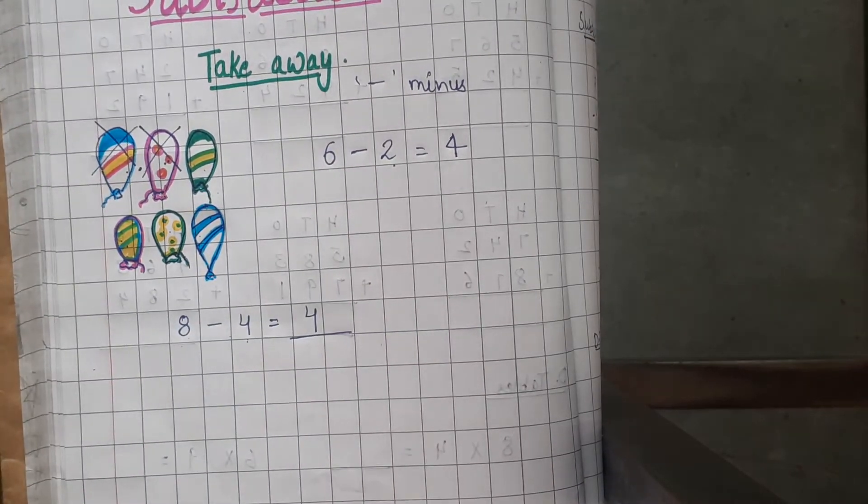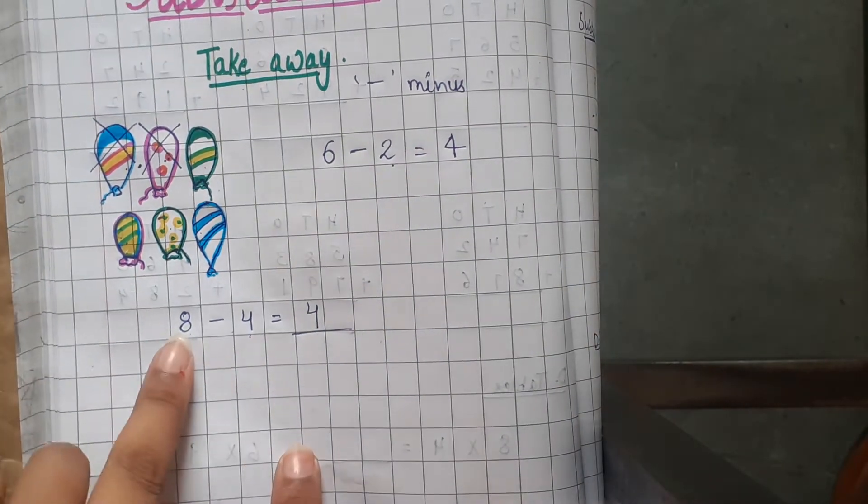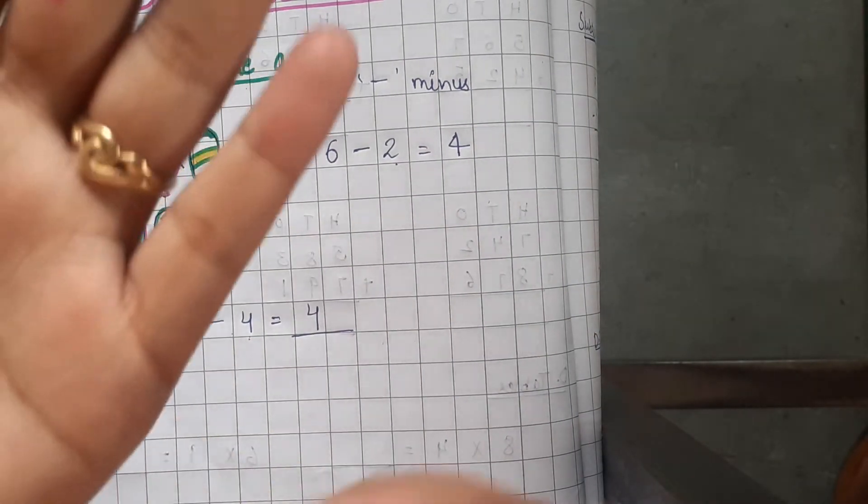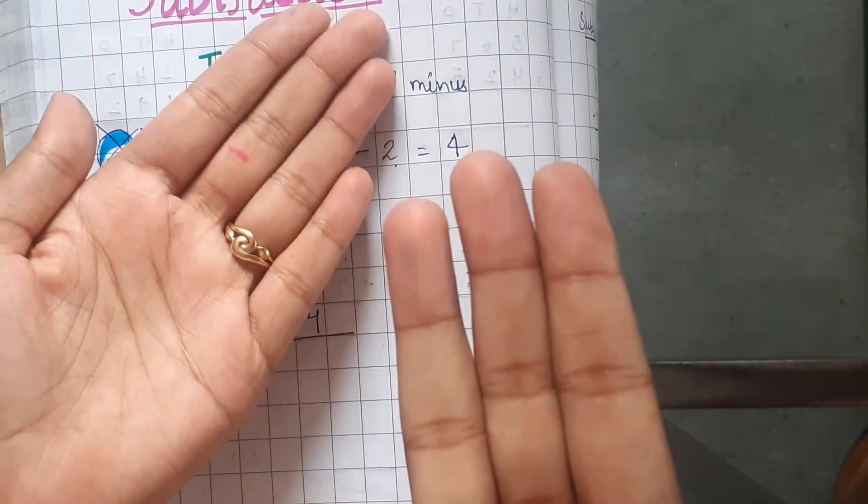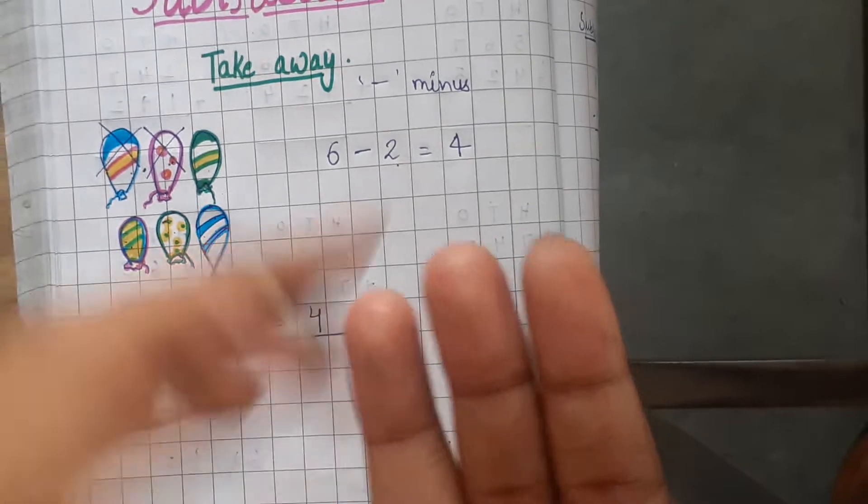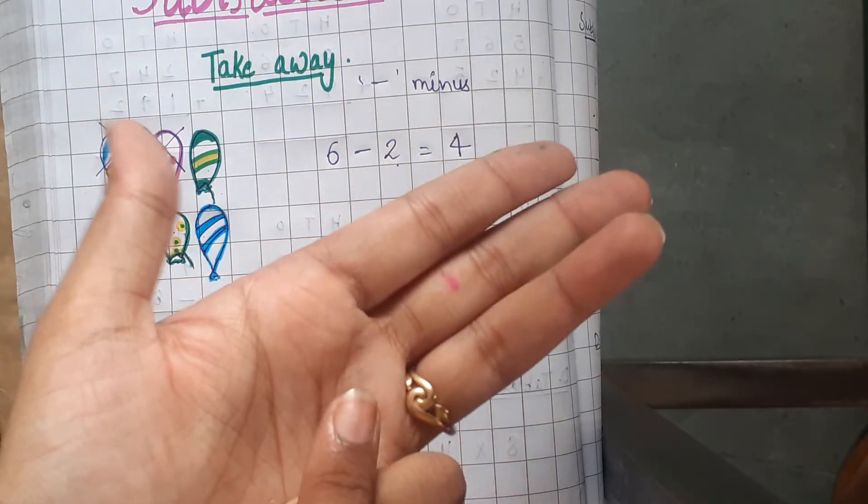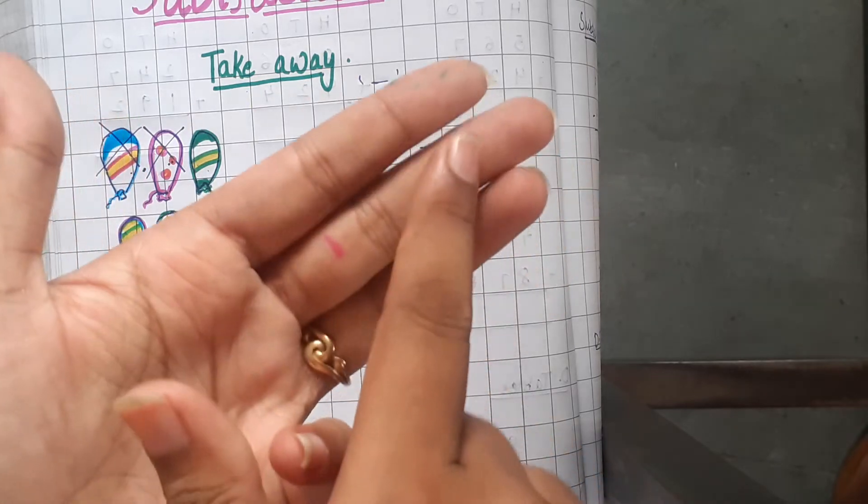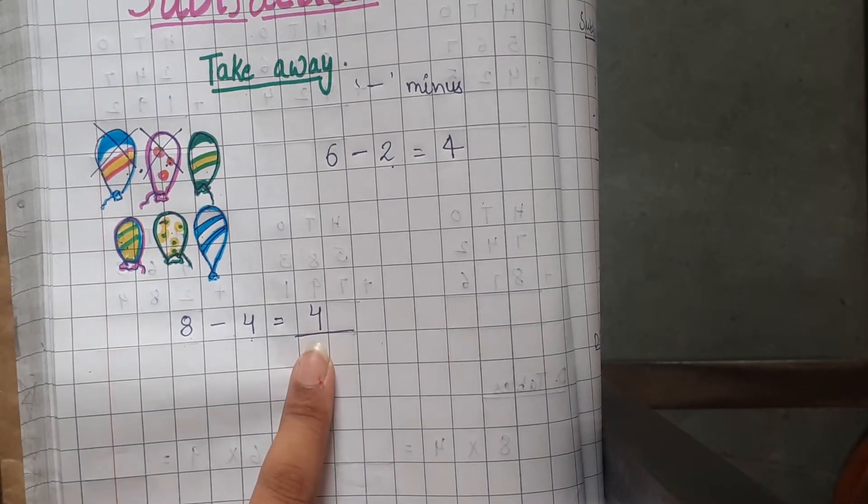You can also use your fingers like this. First of all, you have to open 8 fingers. So 5 and 3, 8 fingers open, and we have to close 4. So 1, 2, 3 and 4. 4 fingers are closed. So 1, 2, 3 and 4, 4 are left. So we can write it like here.